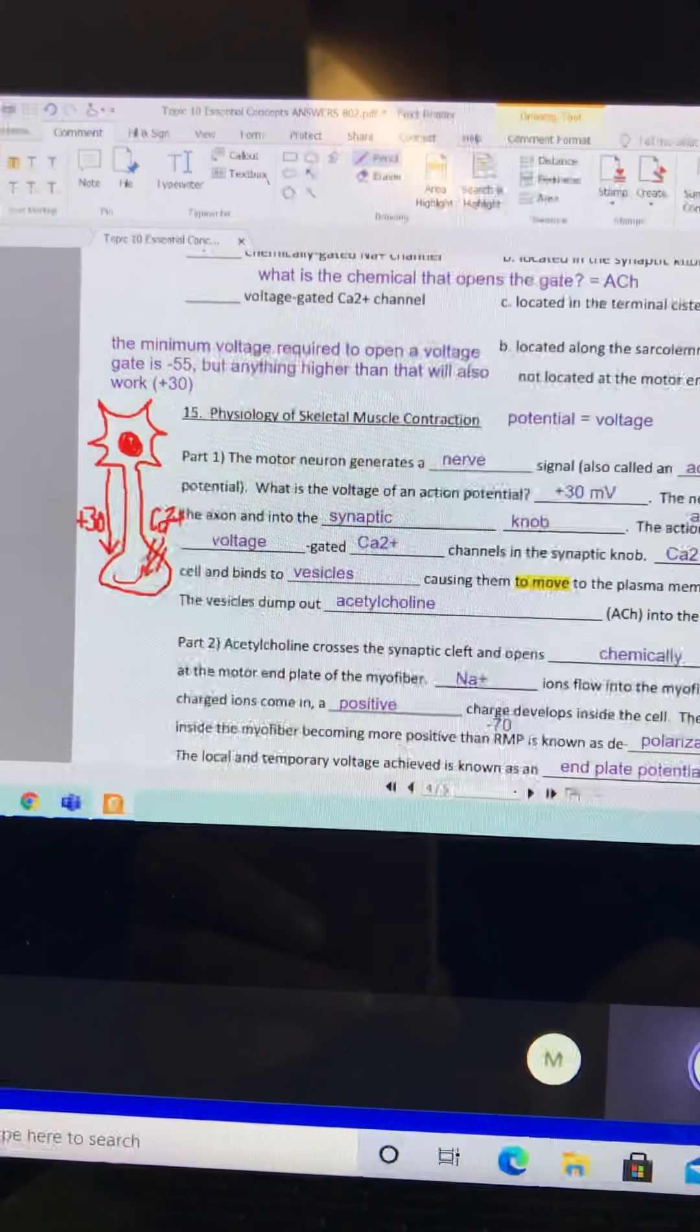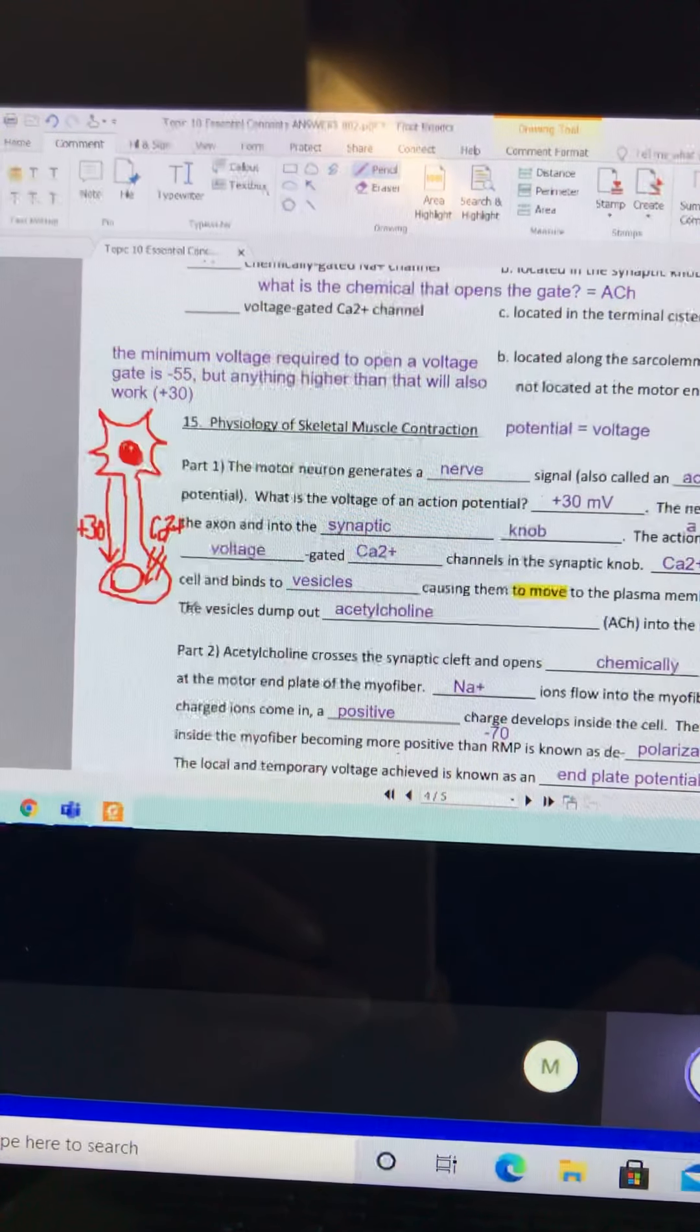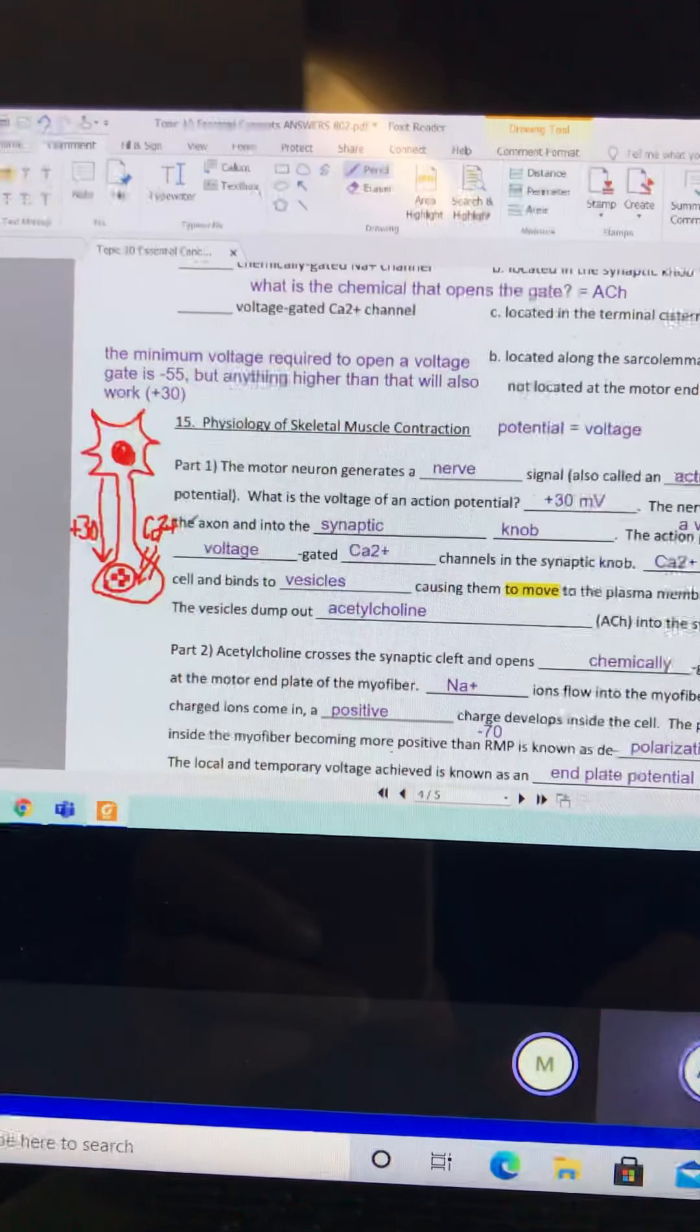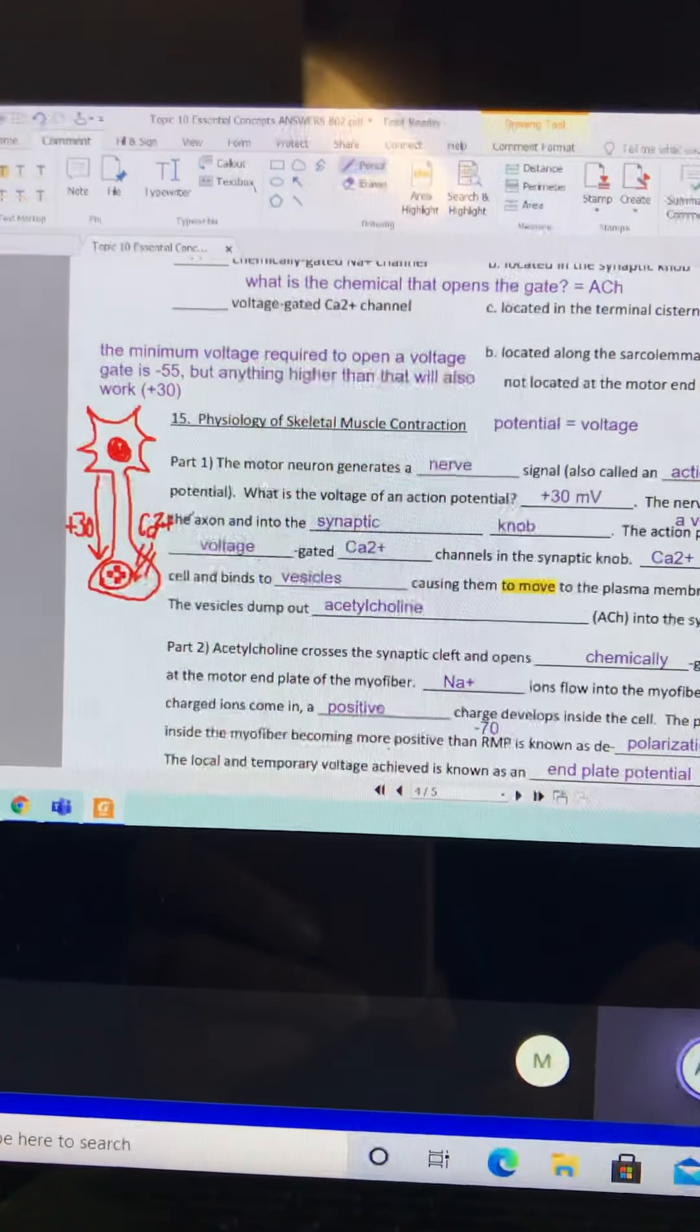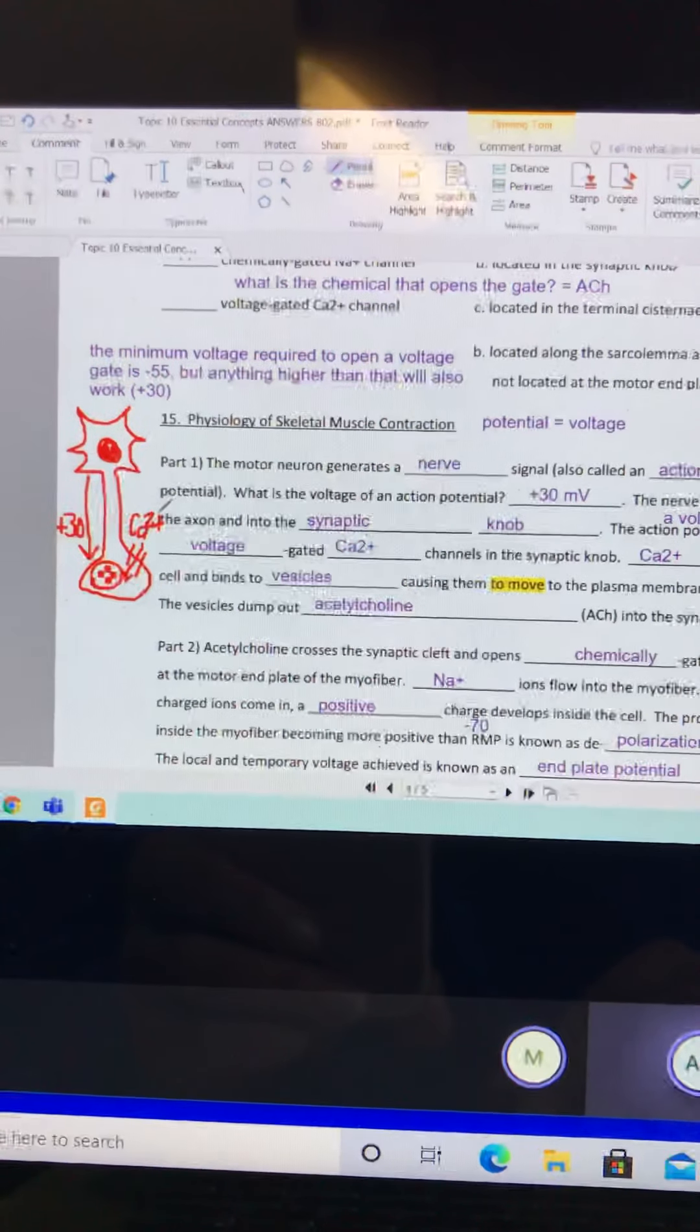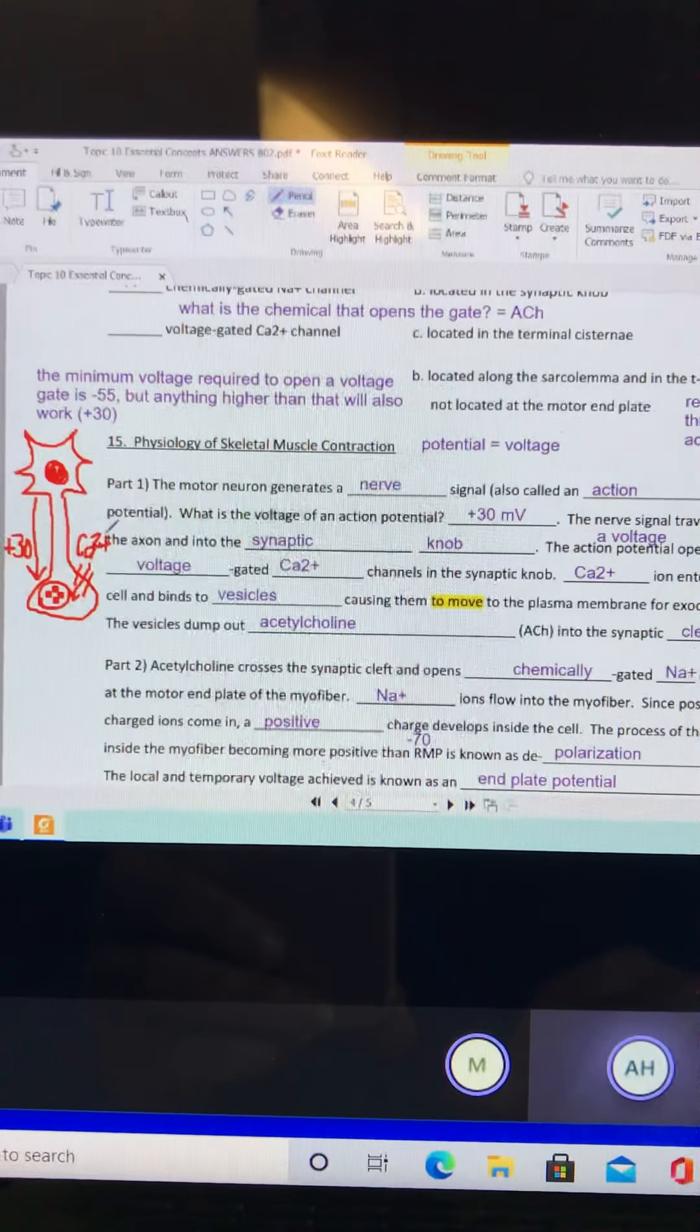And it binds on to that vesicle that has the acetylcholine inside of it. Remember, we've got two ions that we're mainly talking about in this process: calcium ion and sodium ion. Calcium ion binds to the vesicles. Calcium ion moves stuff, sodium ion is used to raise voltage.